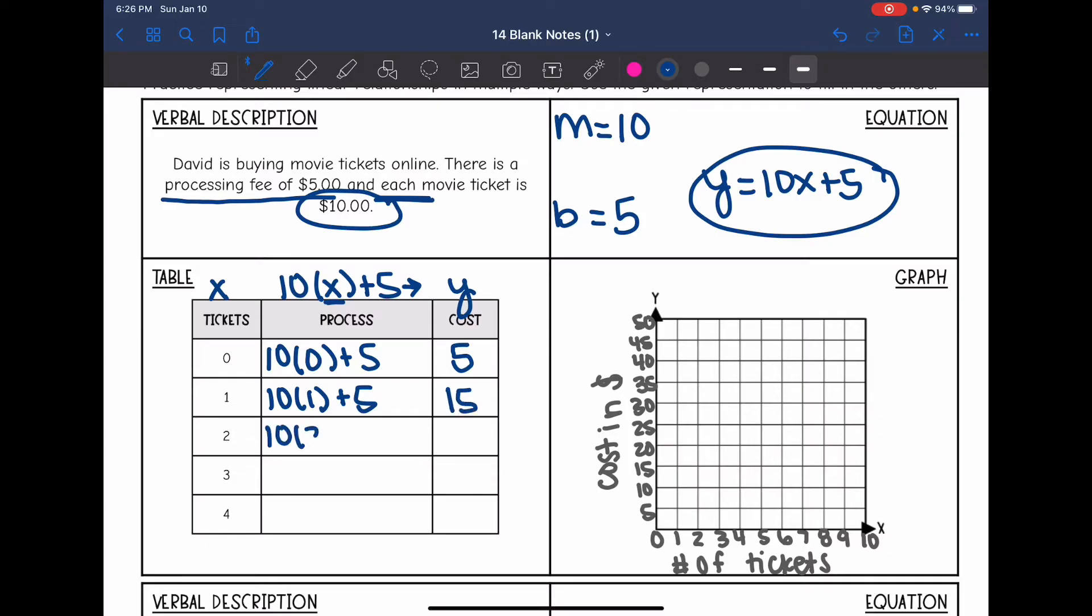Now let's do the same thing for 2 tickets. It's 25. Same thing for 3 tickets, it's 35. And then last one, I'm going to replace x with 4, and it's 45.